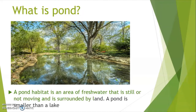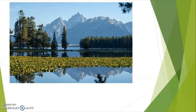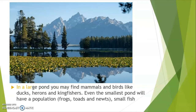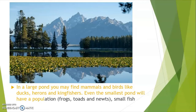is surrounded by land. The pond is smaller than a lake. In a large pond you may find mammals and birds like ducks, herons, and kingfishers. Even the smallest one will have a population of frogs, toads, and newts, and small